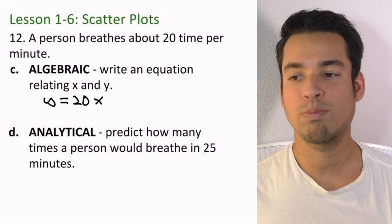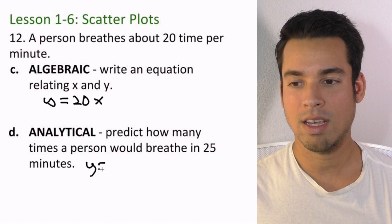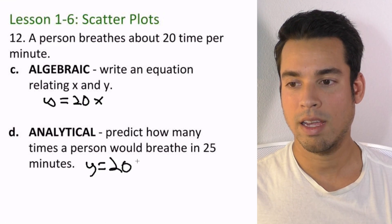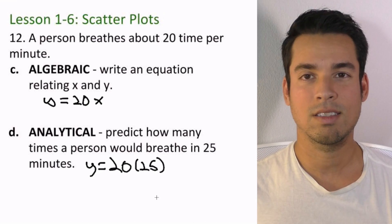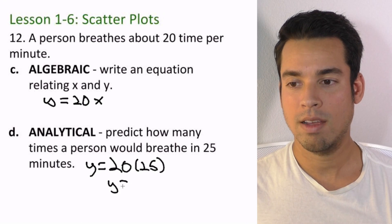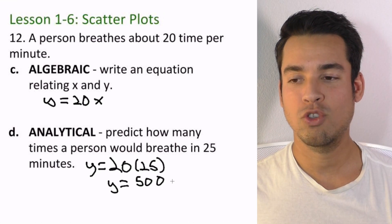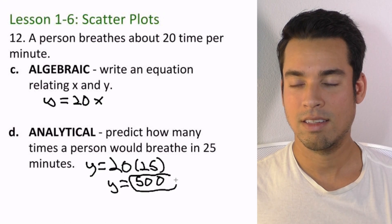Now let's end with predict how many times a person would breathe in 25 minutes. Simple - we take our equation, and 25 minutes, x is time, x is minutes, we plug that 25 in for the x and then we evaluate. What is 20 times 25? That is simply 500. So a person breathes 500 times in 25 minutes. And done.